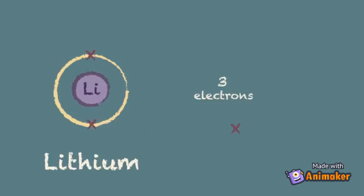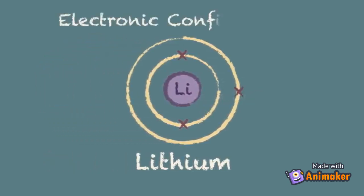However, this shell can only contain a maximum of two electrons. That's one of the rules that you need to remember. The third electron therefore must go into the next shell, which we draw as a larger circle around the outside of the first. And that completes the electronic configuration of a lithium atom.